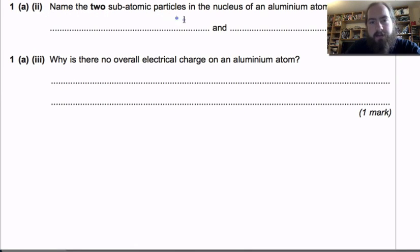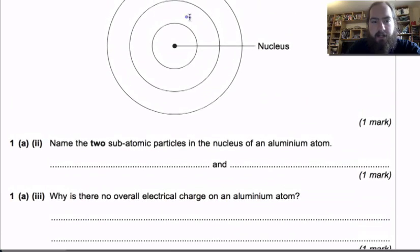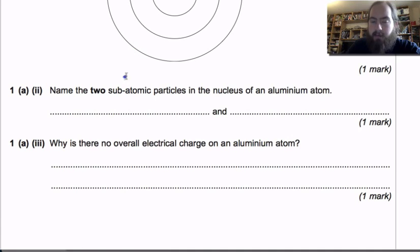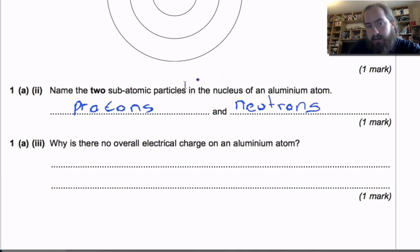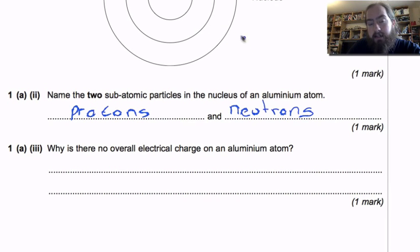Name the two subatomic particles in the nucleus of an aluminum atom. This is looking at the nucleus of the atom here. If you had electrons on the shells it kind of gives it away that the other two that we need to put in are in the nucleus and these are going to be protons and the other subatomic particle that you can find in the nucleus are the neutrons. Fundamental question you need to know that in the atom you've got your protons and your neutrons and around the atom in the shells are the electrons.